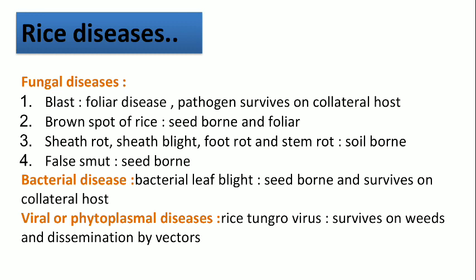The blast pathogen survives on the collateral host. The second fungal disease is brown spot of rice, which is both a seed-borne and foliar disease. Next are sheath rot, sheath blight, foot rot, and stem rot — all soil-borne diseases, particularly sheath blight which is caused by Rhizoctonia. The next fungal disease is false smut, which is a seed-borne disease. In bacterial diseases, bacterial leaf blight is seed-borne and the pathogen survives on the collateral host.